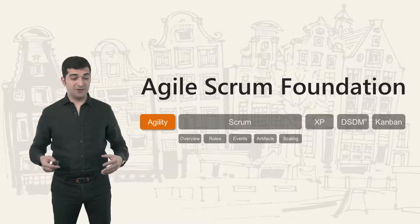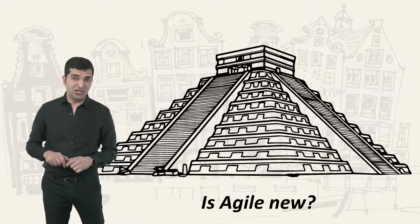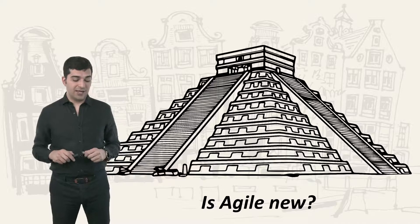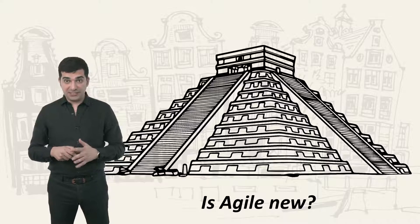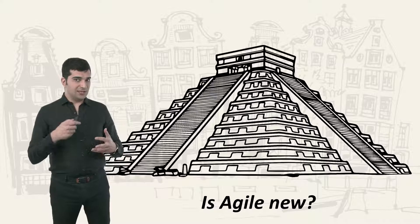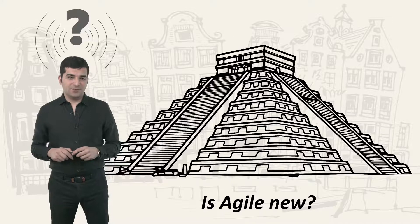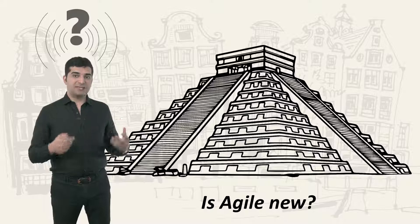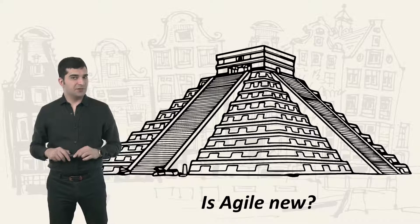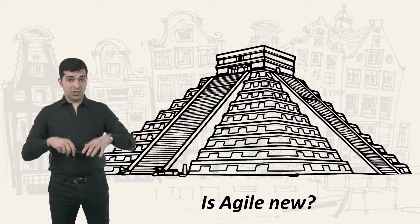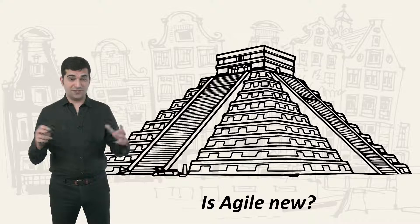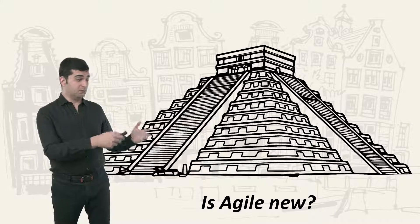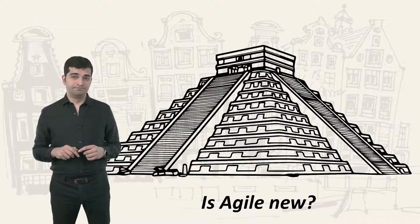People talk about Agile as something extremely new and as a replacement for waterfall. My question from the previous lesson was: is it really a new thing? When you think about it as a type of adaptive lifecycle, I have a very difficult time imagining human society, culture, and civilization without using any type of adaptive systems until 20 years ago. I really can't.